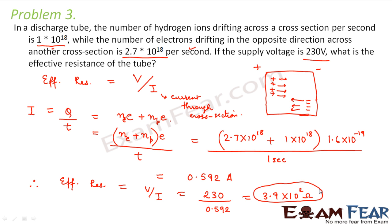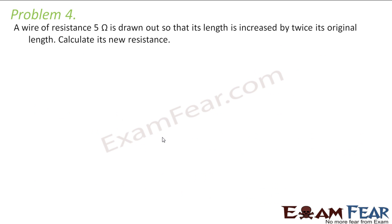In this problem, the total current was equal to the total current through both cross sections. In one cross section the electrons were moving, so Ne — the number of electrons — times charge on each electron. Similarly, in the other cross section the hydrogen ions were moving, so Np — the number of hydrogen ions — times the charge on each electron. This gave us the total current and hence the effective resistance.